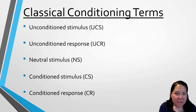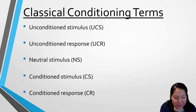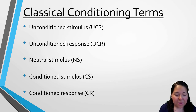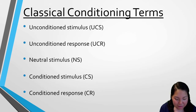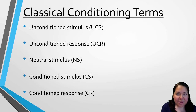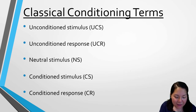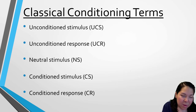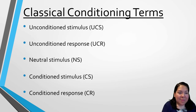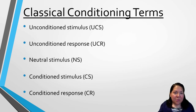The first term is the unconditioned stimulus — something that reliably produces a naturally occurring reaction in an organism. In our example, the dog's food is the unconditioned stimulus because food causes a natural reaction in the dogs. An unconditioned response is a reflexive reaction reliably produced by an unconditioned stimulus, such as the dog's salivating response to the presentation of food.